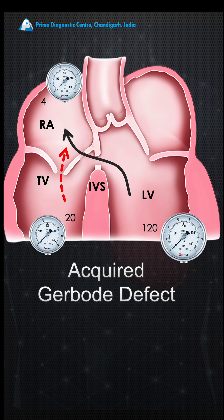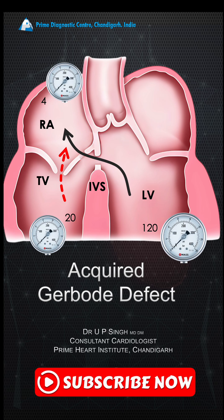Whenever you encounter a high-velocity TR jet and the RA, RV, and pulmonary artery are not dilated, think about a Gerbode defect. I will keep sharing such clinical pearls — please subscribe to the channel so you do not miss new videos.